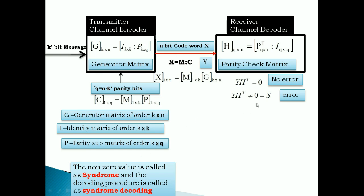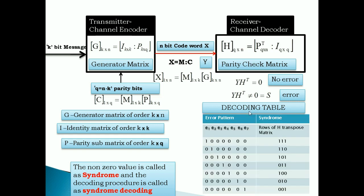After computing the syndrome, a decoding table in the channel decoder contains error patterns paired with their corresponding syndromes. The syndrome is searched for in the decoding table and the corresponding error pattern is obtained. Finally, the error pattern is added to the received codeword to get the correct codeword X. This is how errors are detected and corrected using linear block codes.